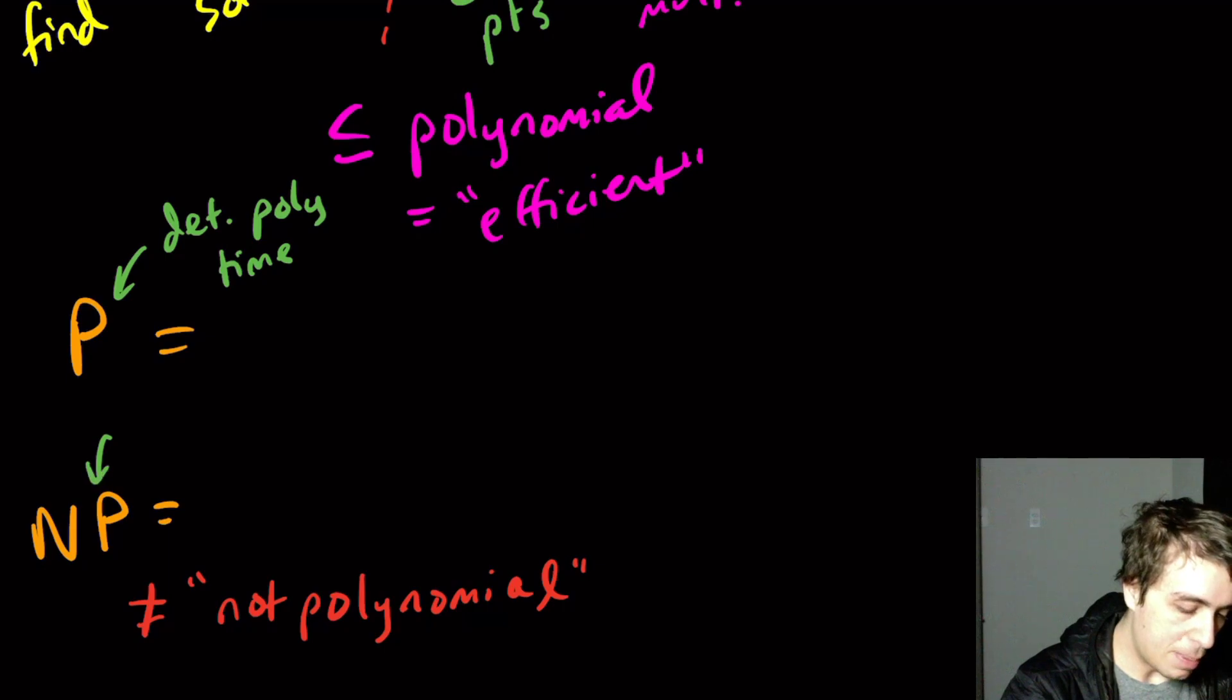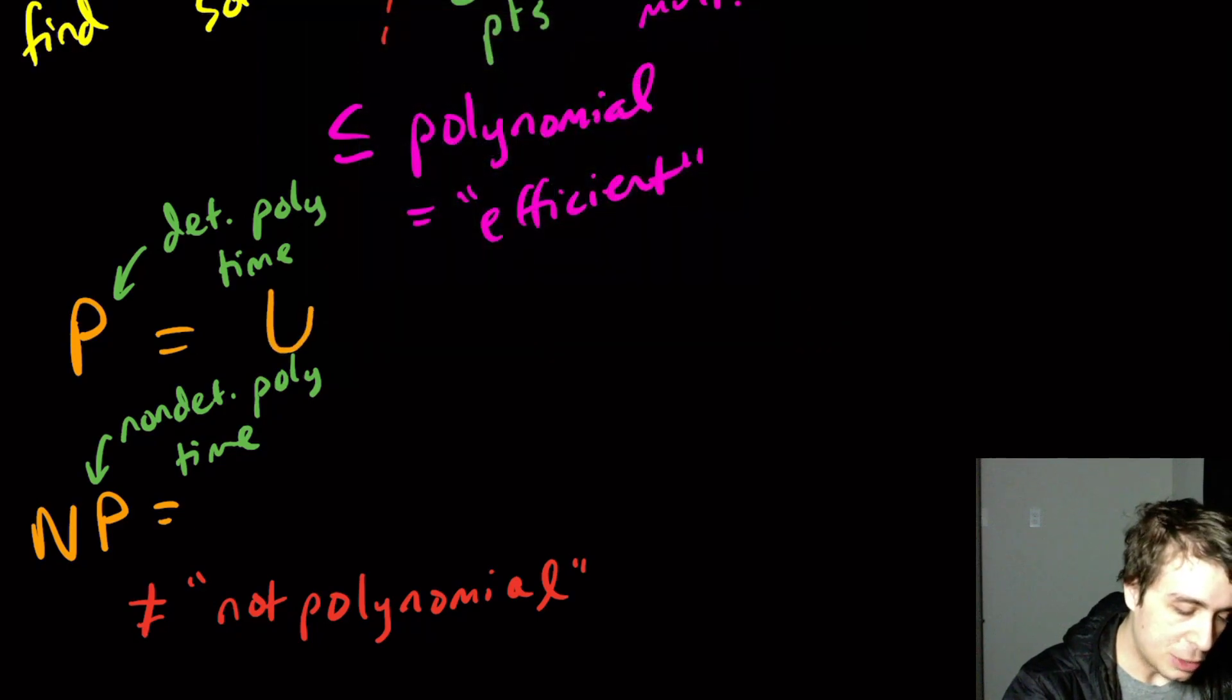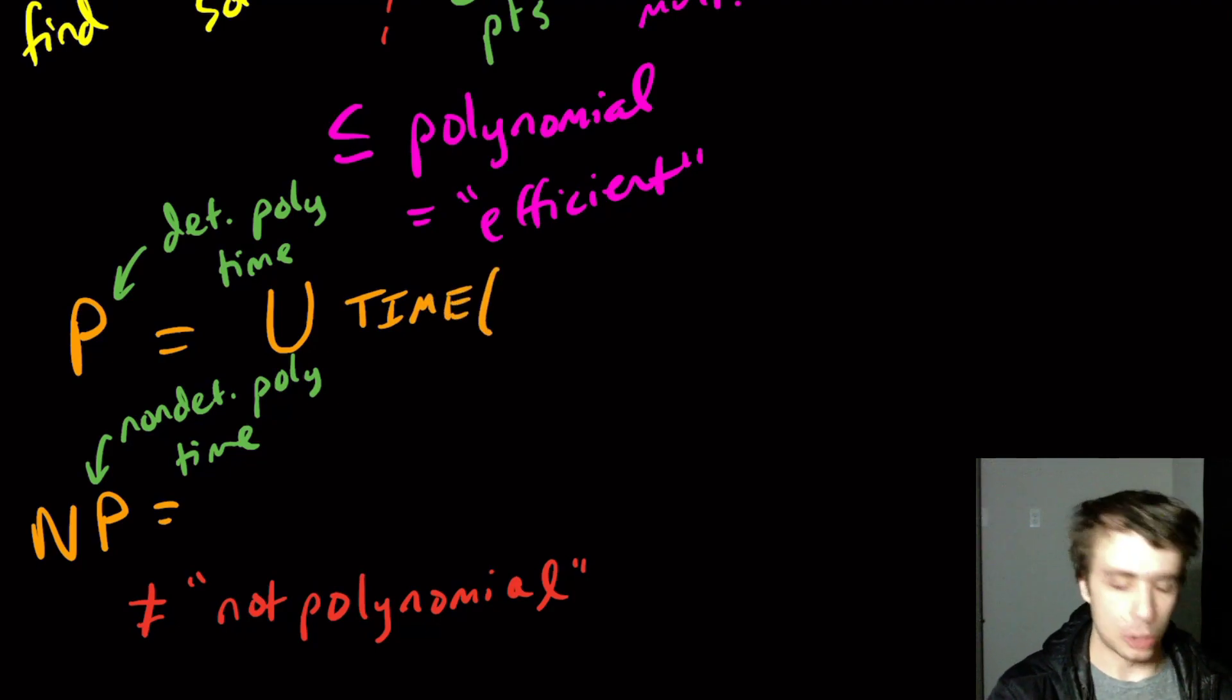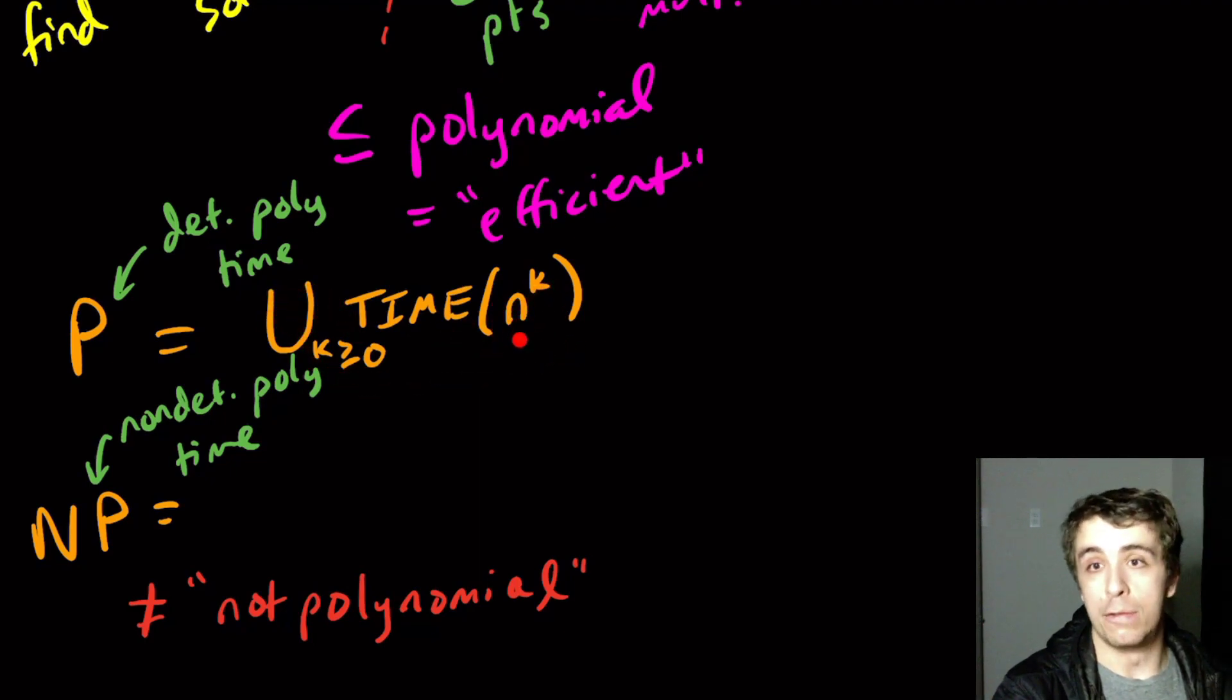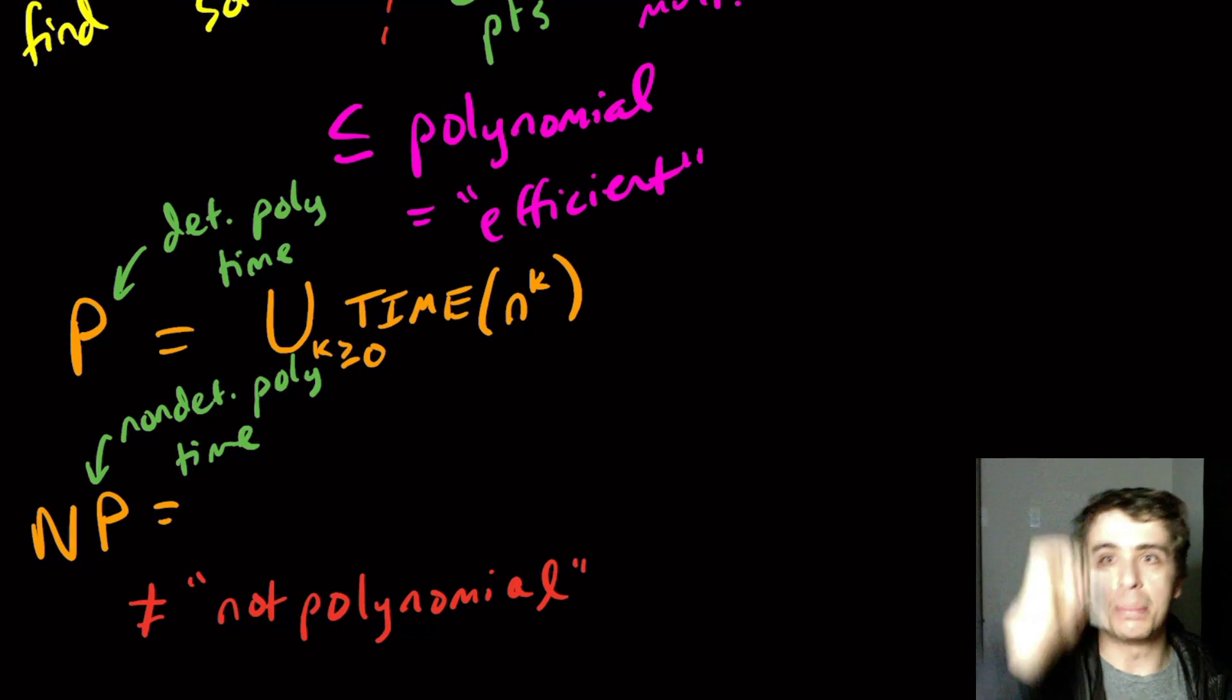What P stands for is deterministic polynomial time. NP means non-deterministic but also poly time. That's the intuitive definition, but I'm going to give the formal one, which is the union of TIME(n^k) where k is at least zero. So it's the union over all k of n to the k. That's a polynomial—you pick any constant number and stick it upstairs.